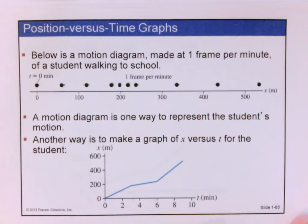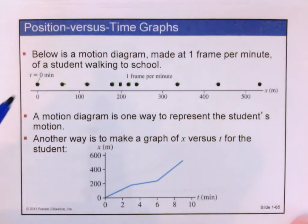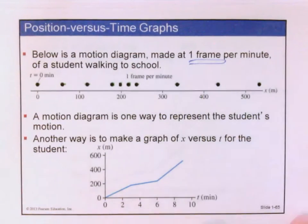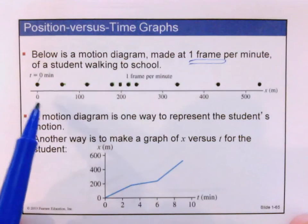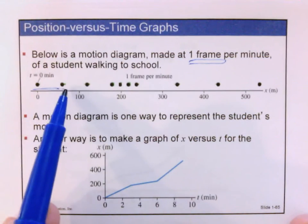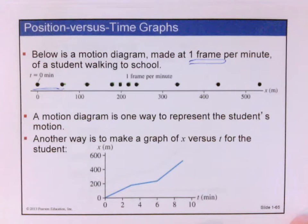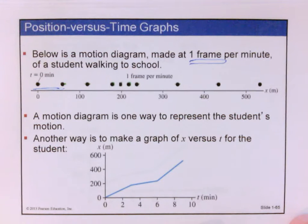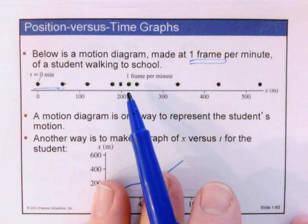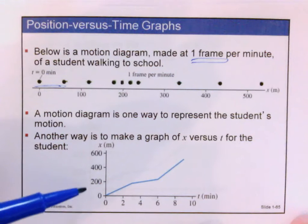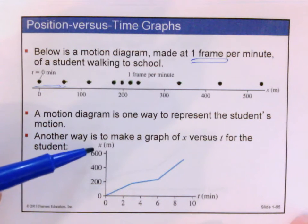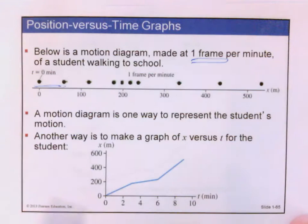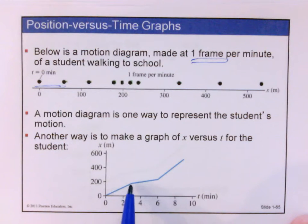In order to get the quantitative, or number-type, information from a motion diagram, we need to know how frequently we're drawing or taking snapshots, how far apart the snapshots are, and we need a number line or a ruler. It starts to get really messy and complicated if we want the details of the motion from the motion diagram. So next we switched to a motion graph, where on what is usually called the y-axis we're graphing position or distance, and on what is usually the x-axis we're graphing time.